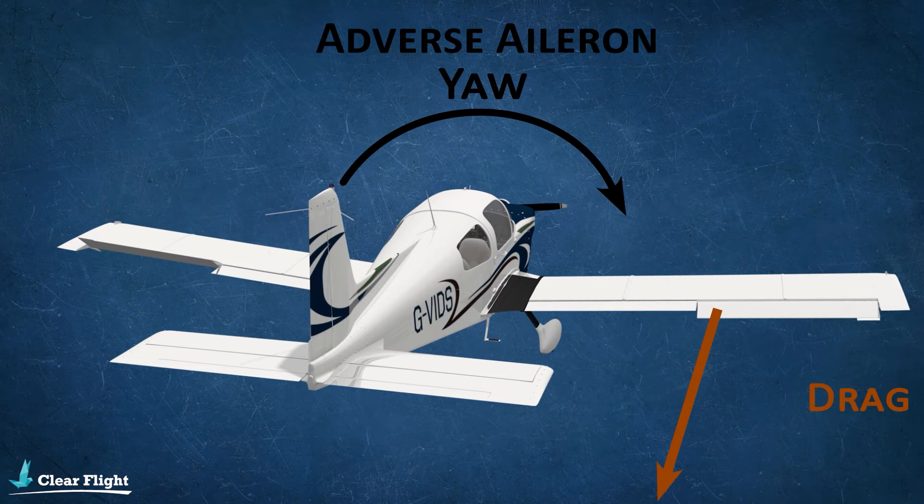The adverse aileron yaw is a result of uneven drag being generated by the ailerons. Aircraft designers often incorporate features that help to even out the aileron drag and reduce adverse aileron yaw. Two of these features are differential ailerons and Frise ailerons.